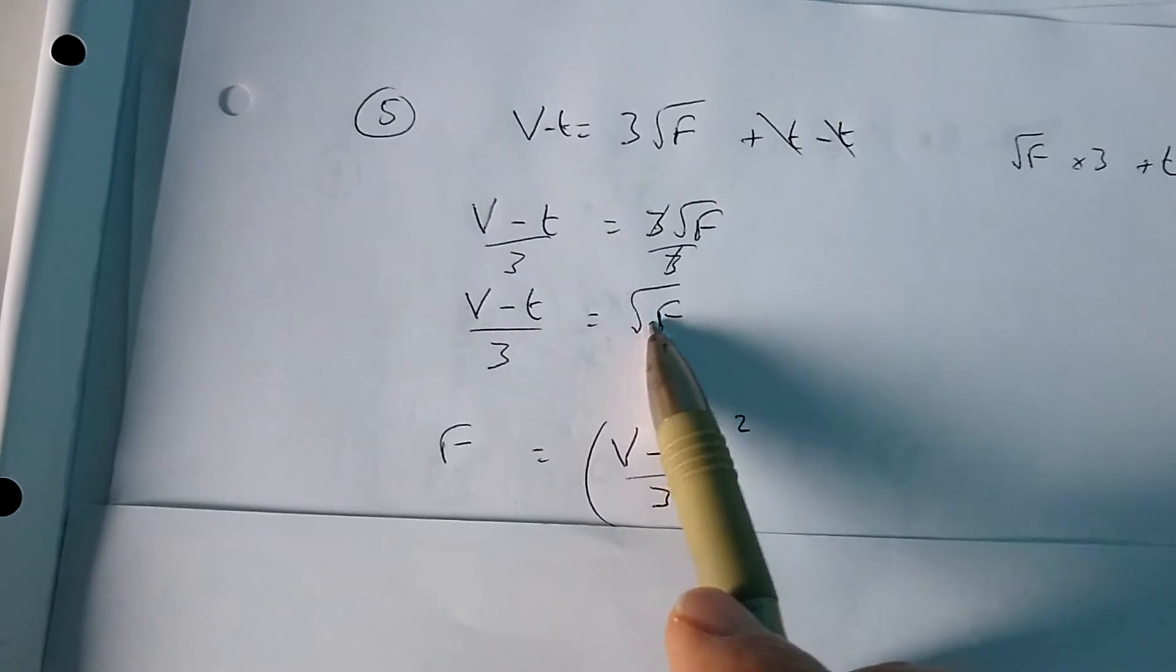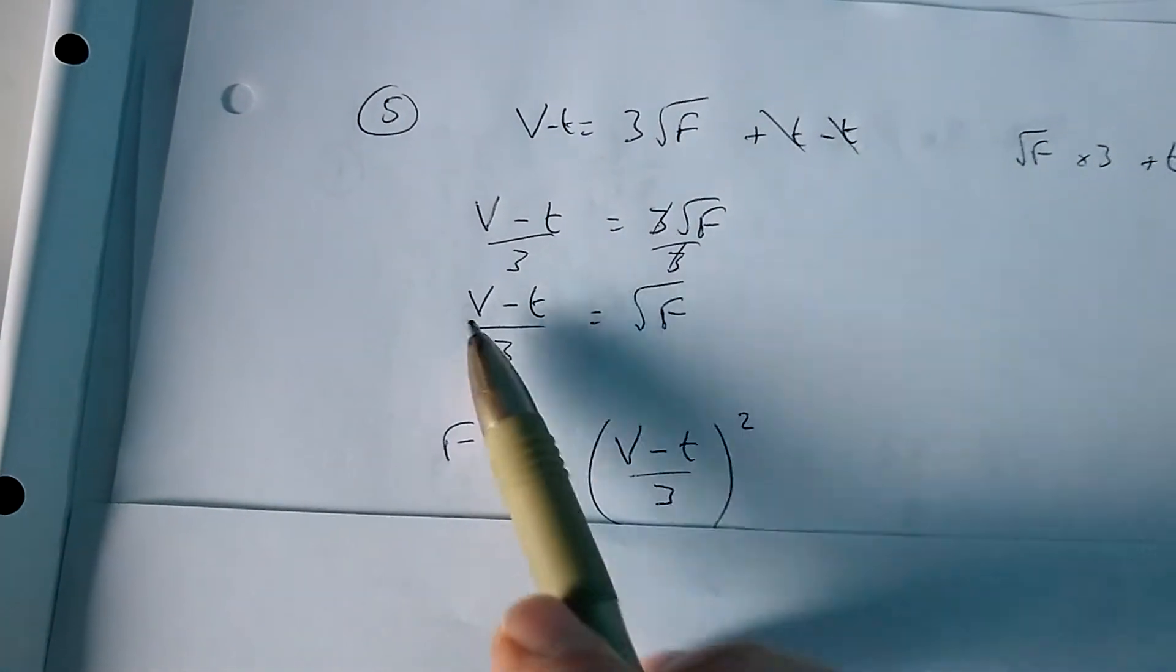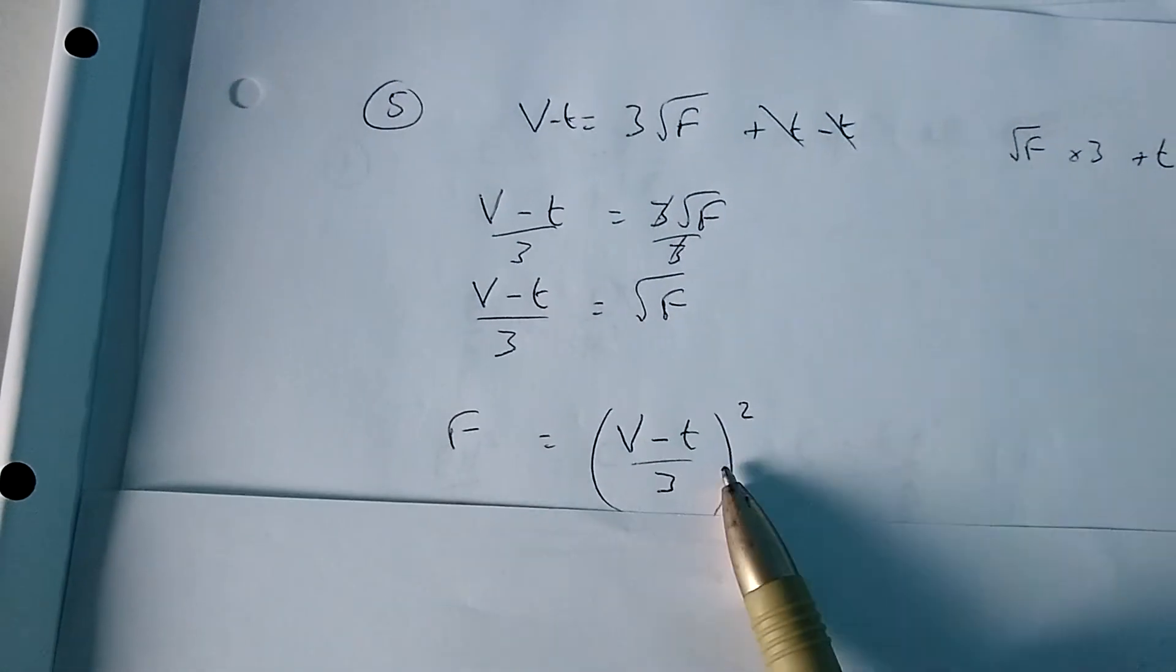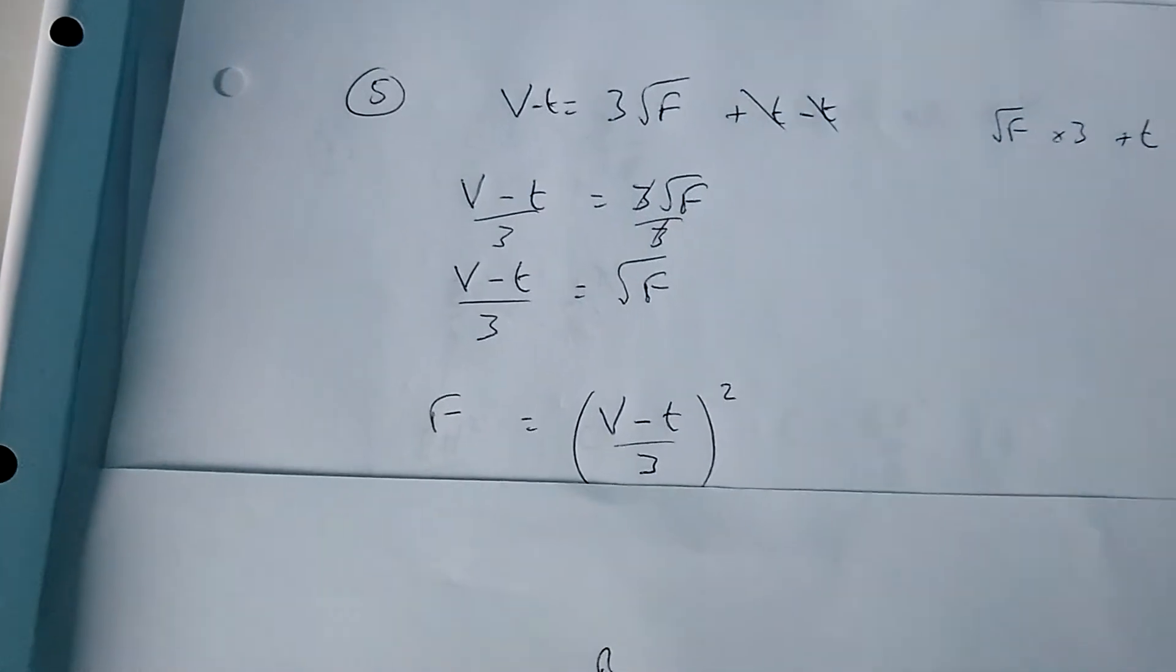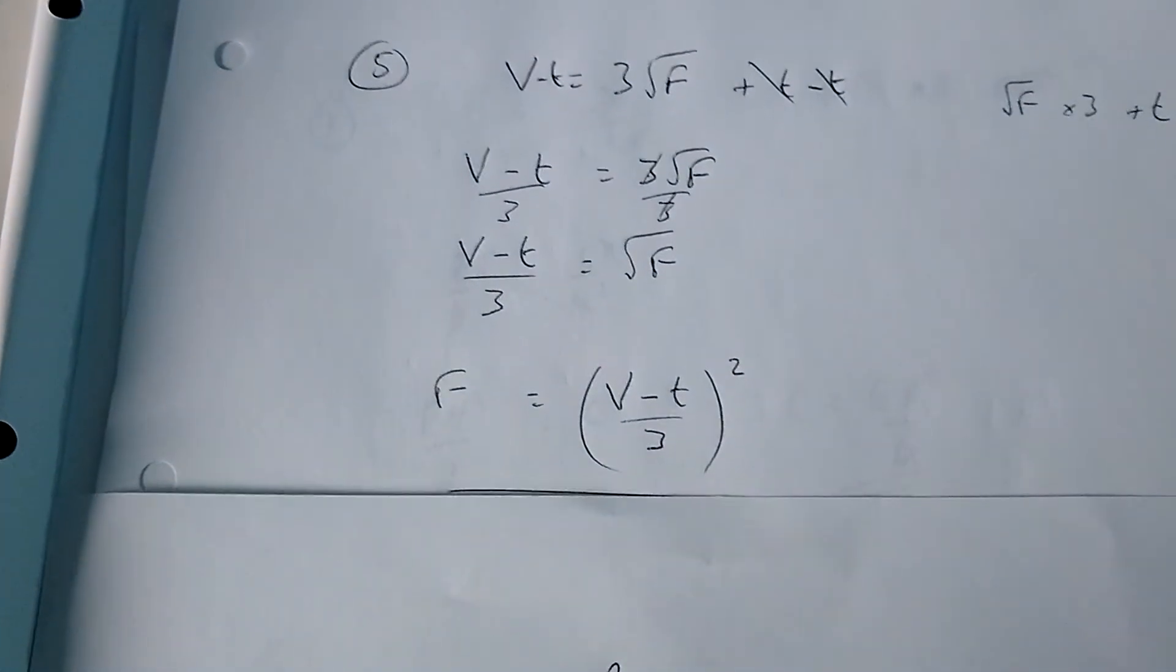So if I square root the square root of f, I just get f. I need to square all of this. Now just leave that like that, we don't need to multiply it out. I'll just leave it like that, that's a suitable format.